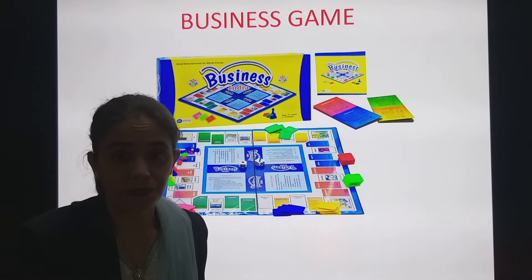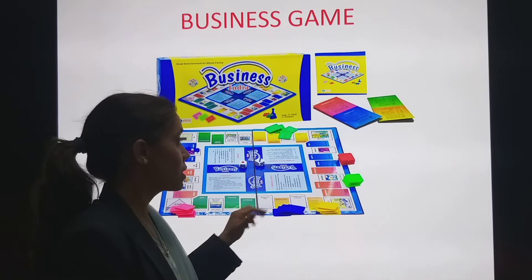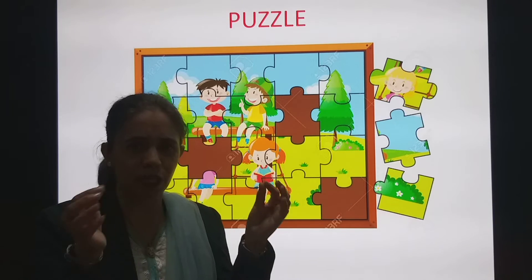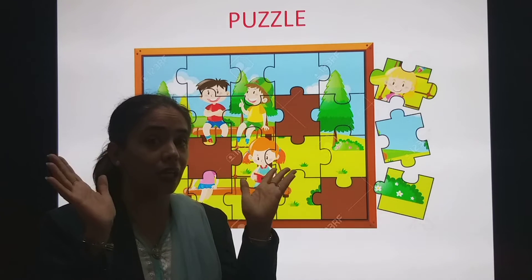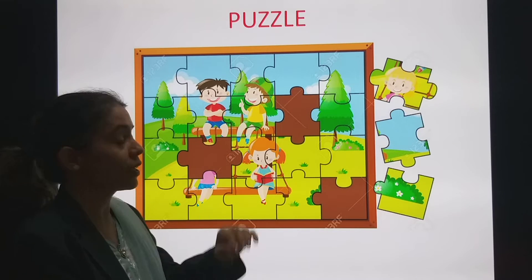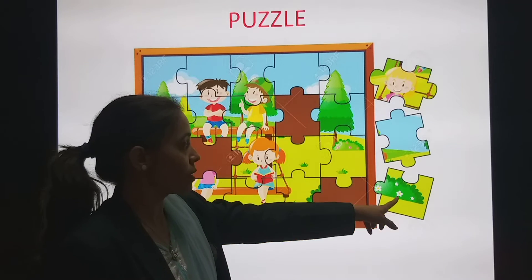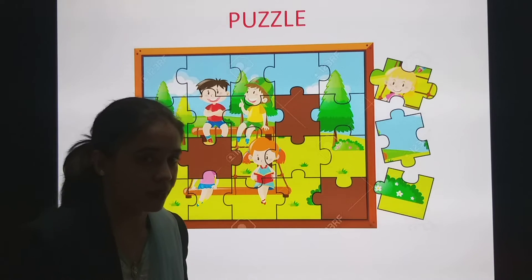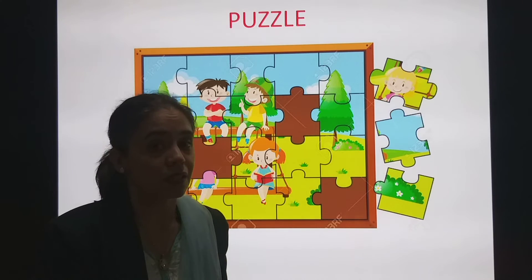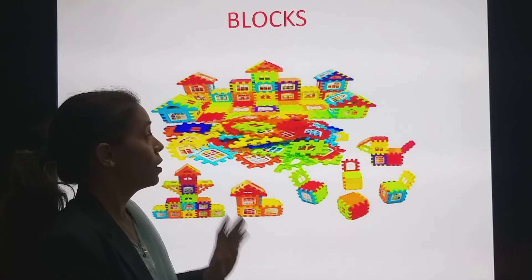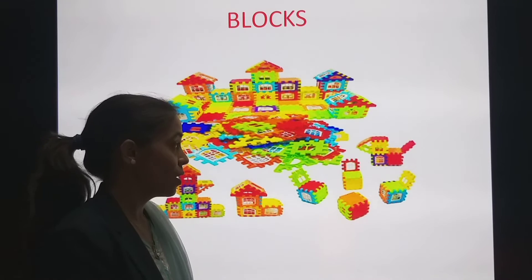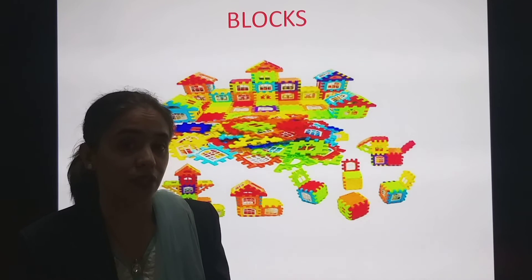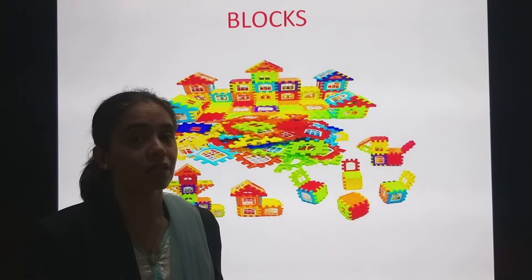Then Business Game. Which game is this? Business Game. Then Puzzle — you all love it. First you scatter all the pieces, then join them back, and a new shape appears — a new picture is created. Which game is this? Puzzle. Then Blocks — favorite! With blocks you can make so many different shapes. You can make a house, a robot. Which game is this? Blocks.